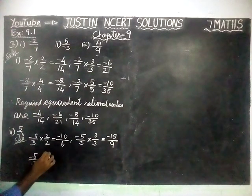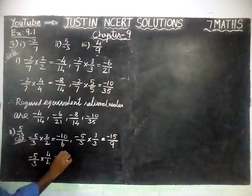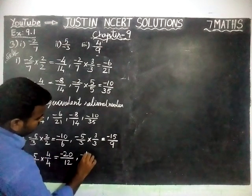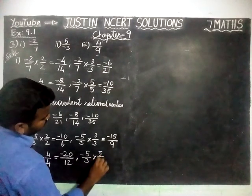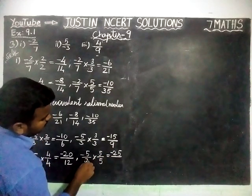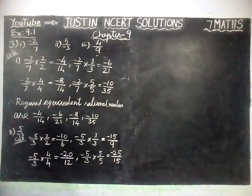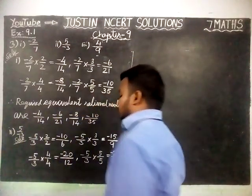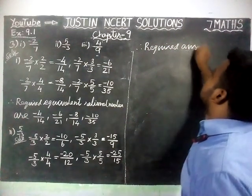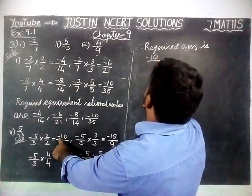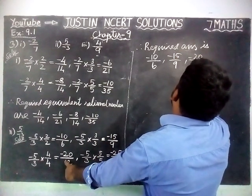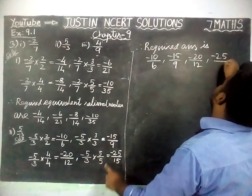Next, minus 5 by 3 into 4 by 4 is equal to: 5 4s are 20, minus into plus equal to minus, divide by 3 4s are 12. Next, minus 5 by 3 into 5 by 5 is equal to: 5 5s are 25, minus into plus equal to minus, divide by 3 5s are 15. Therefore, the required answer is: minus 10 by 6, minus 15 by 9, minus 20 by 12, minus 25 by 15.